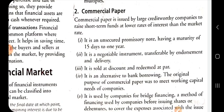The third feature is that it is sold at discount and redeemable at par — commercial paper also behaves as a zero coupon bond. It is an alternative to bank borrowing. The original purpose of commercial paper was to meet working capital needs of the company, so large companies use commercial paper instead of borrowing from banks.